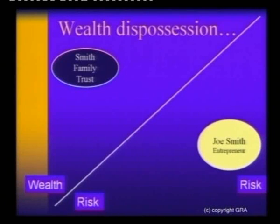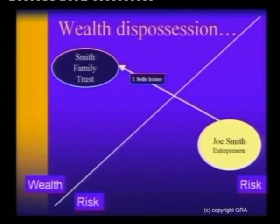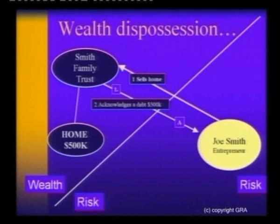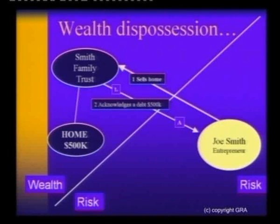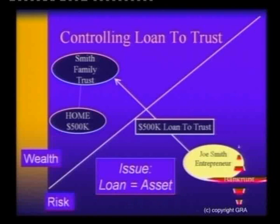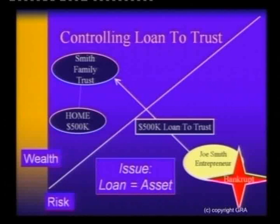Running you through it: the Smith Family Trust would be formed, Joe Smith would sell his home to the trust, and the trust would say it needs to get money from somewhere, so they'll borrow it off Joe. They acknowledge a debt back to Joe, and that transfers the asset to the trust. So now you've swapped the family home for a loan of $500,000 through to the trust. The issue here is that Joe has lent $500,000 to the trust, and if he becomes bankrupt, he hasn't actually achieved anything from an asset protection perspective.